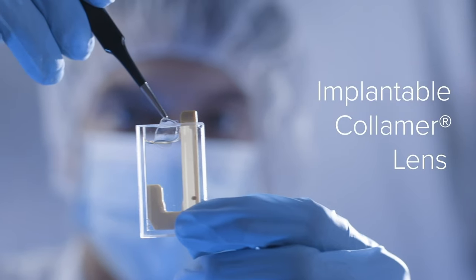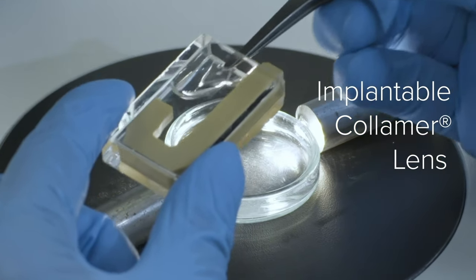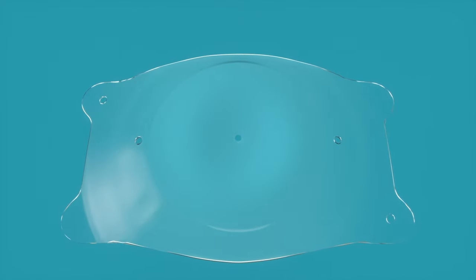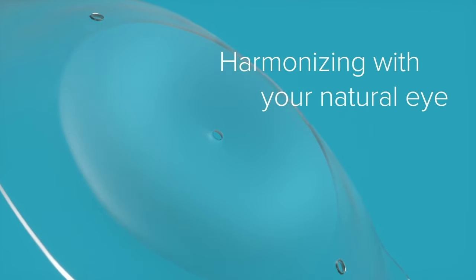EvoVizion ICL is an implantable collamer lens that can correct common visual limitations like nearsightedness and astigmatism, freeing you from glasses and contacts while harmonizing with your natural eye.